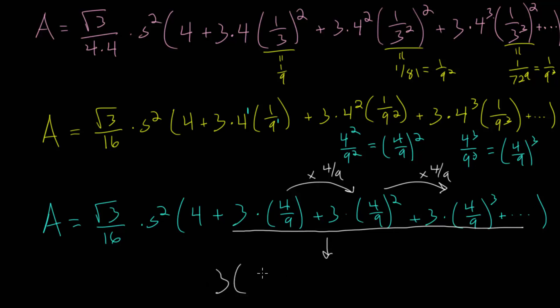We have 3 multiplied by 4 over 9 plus 4 over 9 squared plus 4 over 9 to the third power.